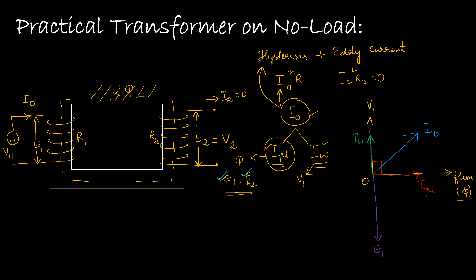We need to consider the number of turns on the primary side N1 and on the secondary side N2. There are three possibilities: N1 equals N2, N1 greater than N2, or N1 less than N2. From the transformation ratio, N2/N1 equals E2/E1, meaning the number of turns and the EMFs are directly proportional to each other.